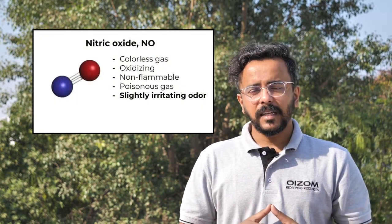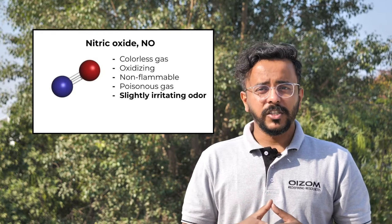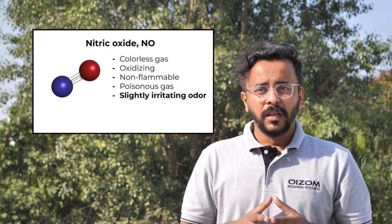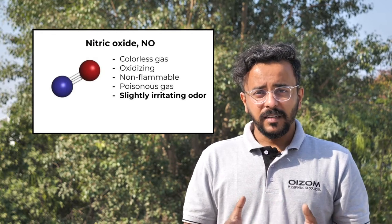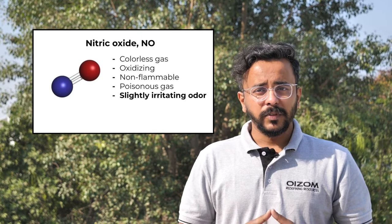Nitric Oxide is a colorless gas consisting of one nitrogen atom bonded to one oxygen atom. It is an oxidizing, non-flammable, poisonous gas with a slightly irritating odor.